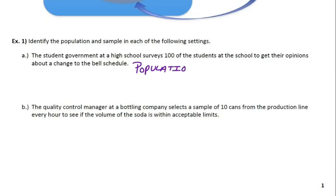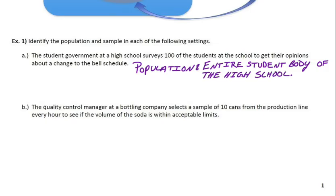So let's start with what the population would be. Now, they only spoke to 100 students in their survey, but they're going to use those opinions and those 100 students to hopefully represent the entire student body of the high school. So that would be the population they're interested in learning about. And then their sample would be the people they actually collected data on. So the sample would just be the 100 students that they talked to.